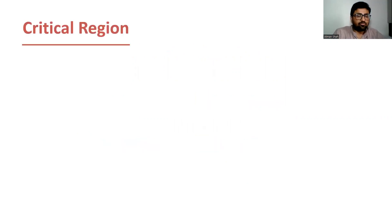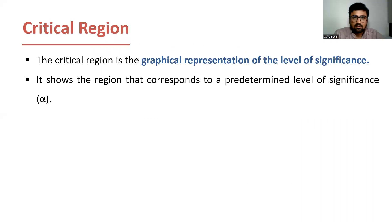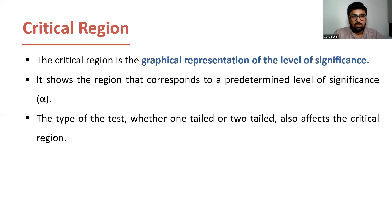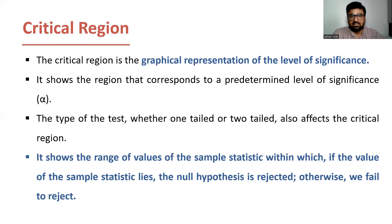Let's begin with the idea of critical region. The critical region is the graphical representation of the level of significance. It shows the region that corresponds to a predetermined level of significance, that is alpha. The type of the test, whether it is one-tailed or two-tailed, also affects the critical region. It shows the range of values of the sample statistic within which, if the value of the sample statistic lies, the null hypothesis is rejected — otherwise we fail to reject the null hypothesis.